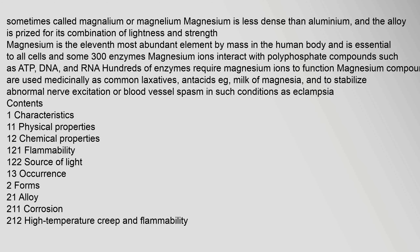Magnesium ions interact with polyphosphate compounds such as ATP, DNA, and RNA. Hundreds of enzymes require magnesium ions to function. Magnesium compounds are used medicinally as common laxatives, antacids (e.g., milk of magnesia),